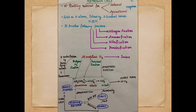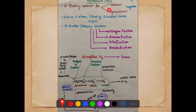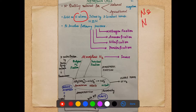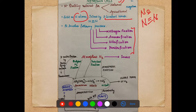Nitrogen is a very limiting nutrient for natural as well as the agricultural ecosystem. When we talk about the nitrogen cycle, nitrogen exists as N₂ — that is two nitrogen atoms joined with three covalent bonds. The first step is nitrogen fixation, because we know that nitrogen present in the atmosphere can never be directly utilized by plants.